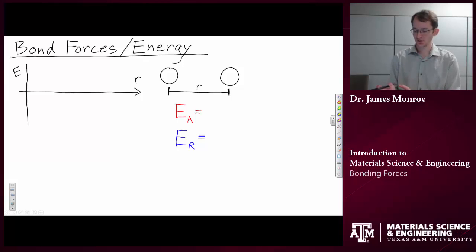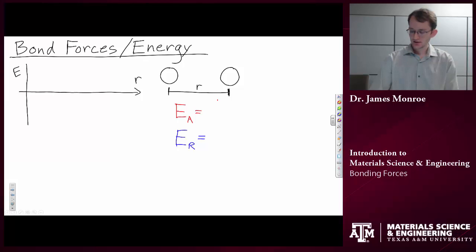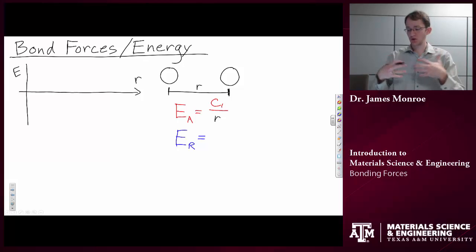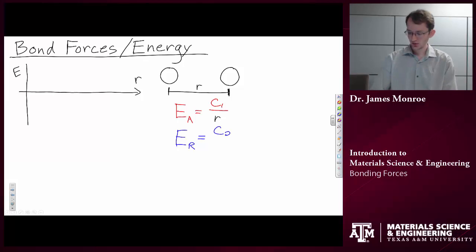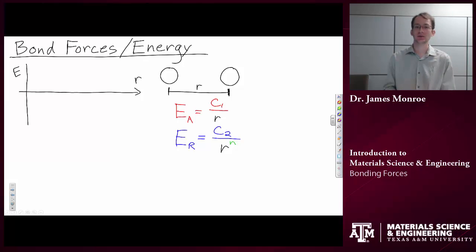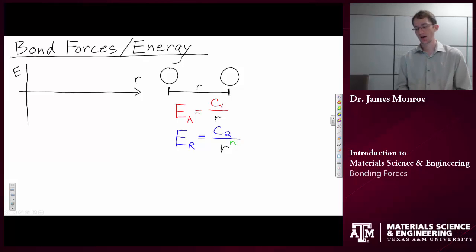These are energies, not forces — we haven't gotten to forces yet. The attractive energy takes the form c1 (your book uses 'a') over r, where c1 or a is just a constant. The repulsive energy takes the form c2 (your book uses 'b') over r to the n. The value of n will be different for different types of bonding — covalent, ionic, van der Waals — all these different bond types will have different values of n.